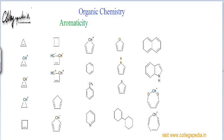We have some compounds here and we have to identify whether these are aromatic, anti-aromatic, or non-aromatic. We start with the first given molecule: cyclopropene. Our line of thinking will be: the first thing to identify is whether the molecule is planar or not. If it is planar, then only it can be aromatic or anti-aromatic. If it is not planar, straight away that will be non-aromatic.